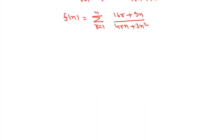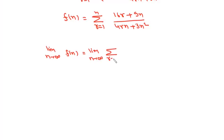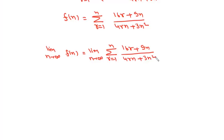Now we need to find the limit as n tends to infinity of f(n). So we take this limit: limit n tends to infinity of the summation r varies from 1 to n of (16r plus 9n) upon (4rn plus 3n²).